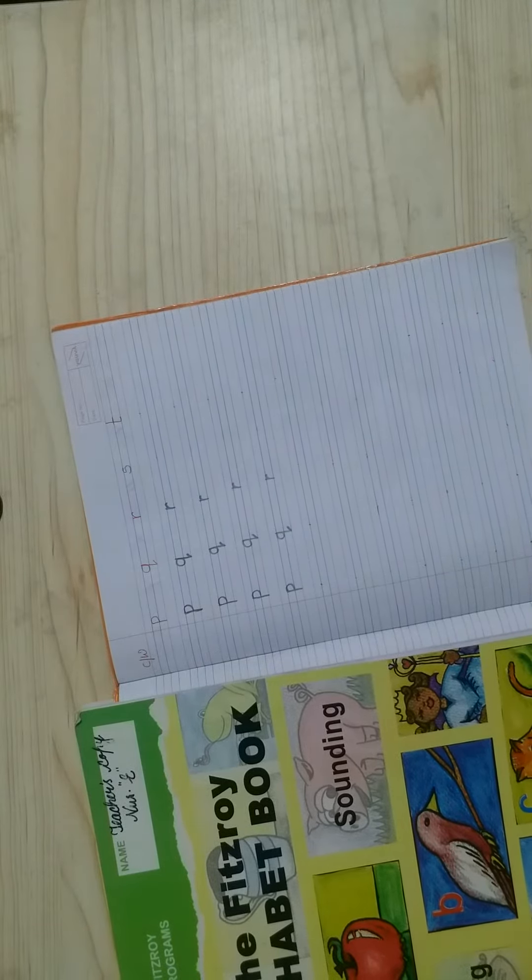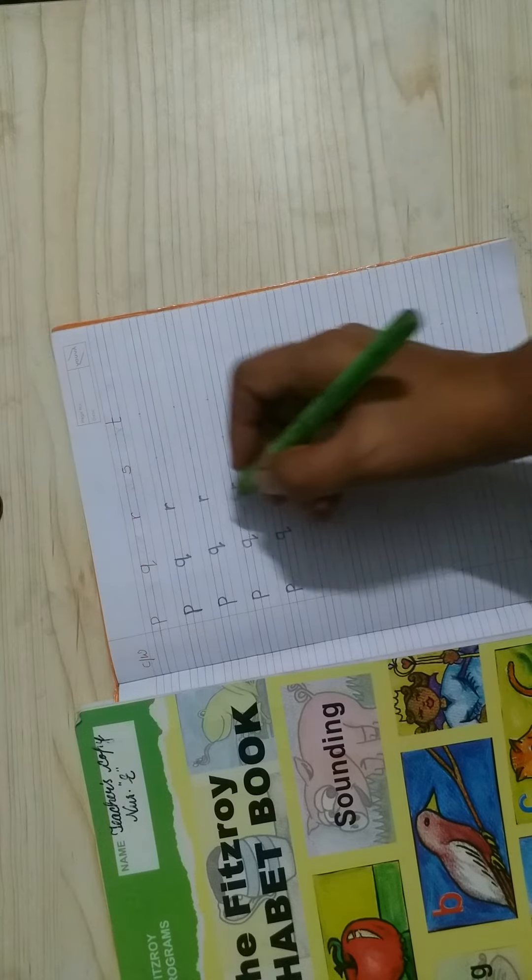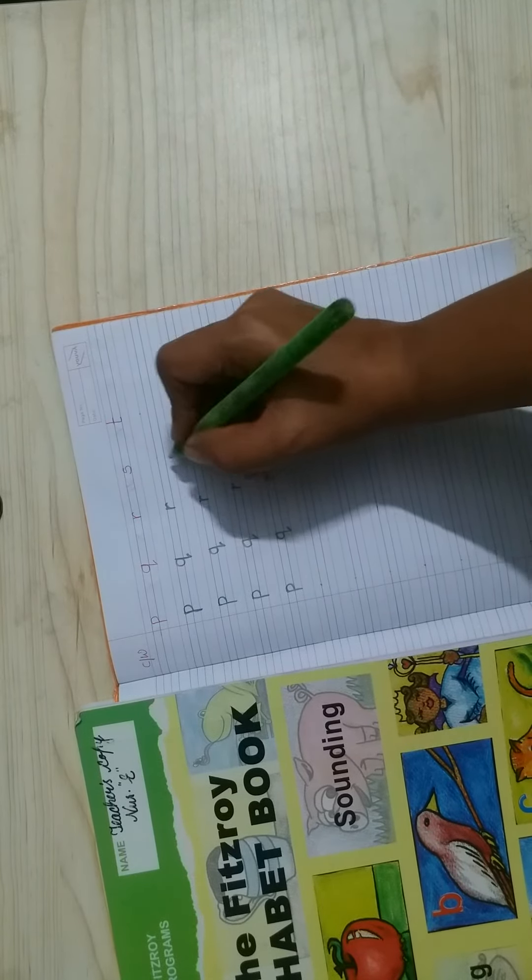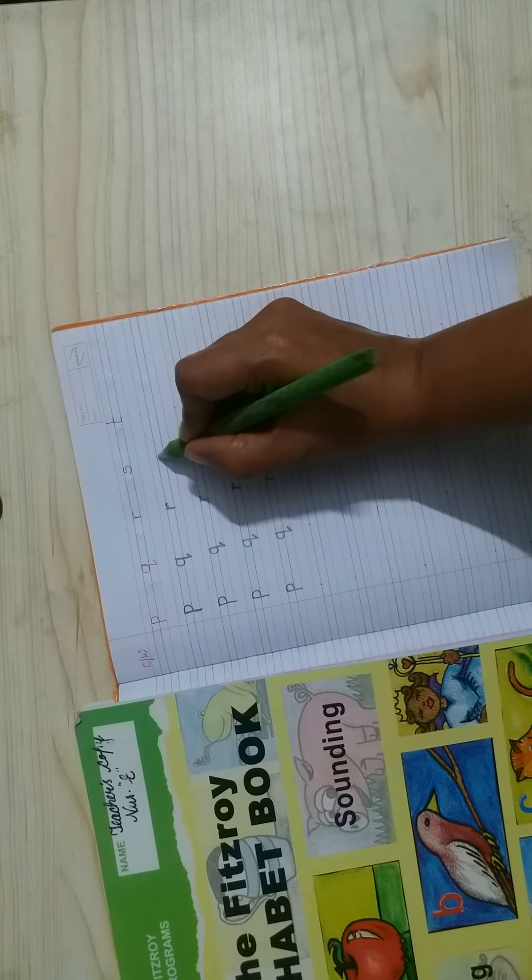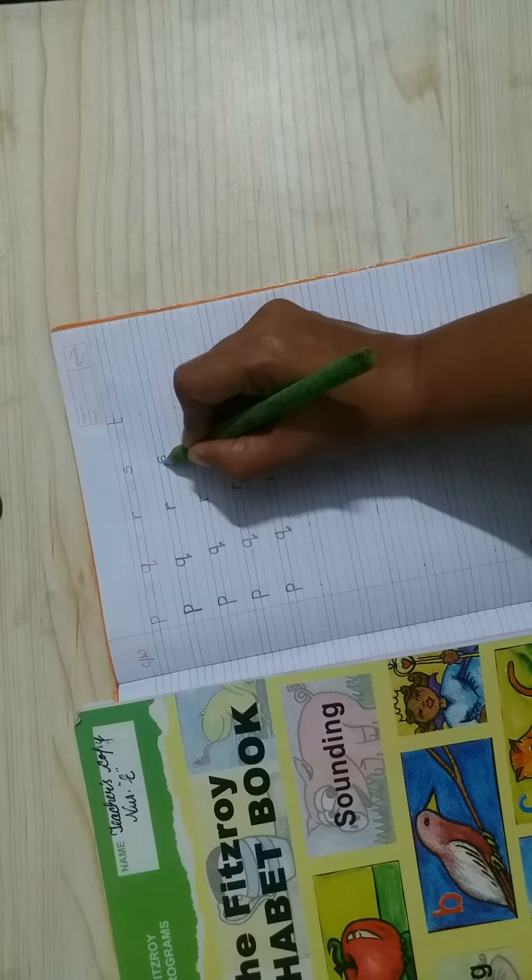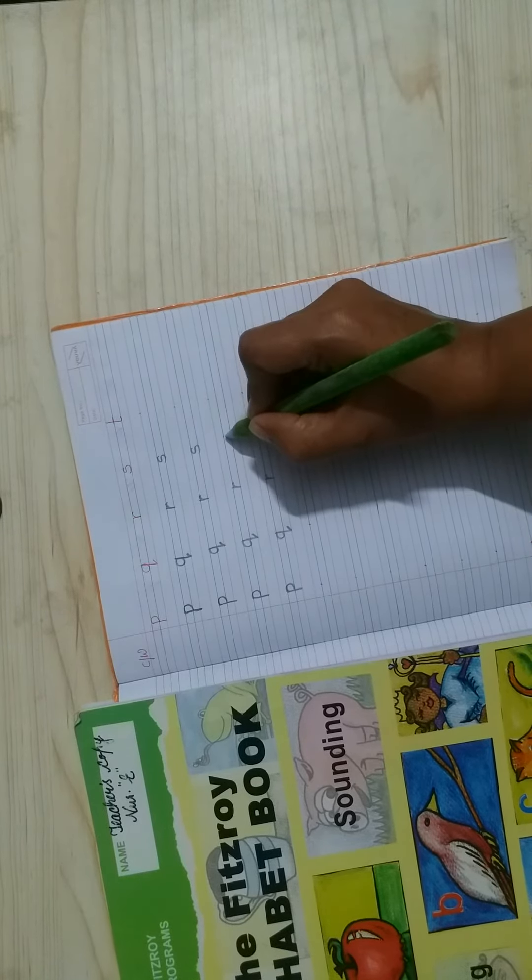This is the r. Next is small s. So, you have to write down s in this blue line. Like this, you have to make s.